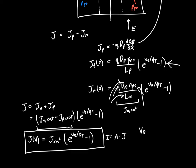Once you plug in all the values to get J_sat, you know everything needed to calculate the current. The total current is just the area times the current density J. I hope you enjoyed the video — if you have any questions or comments please post them below. In the next video we'll do a brief example to consolidate everything we've learned in the last few videos. Thanks for watching.